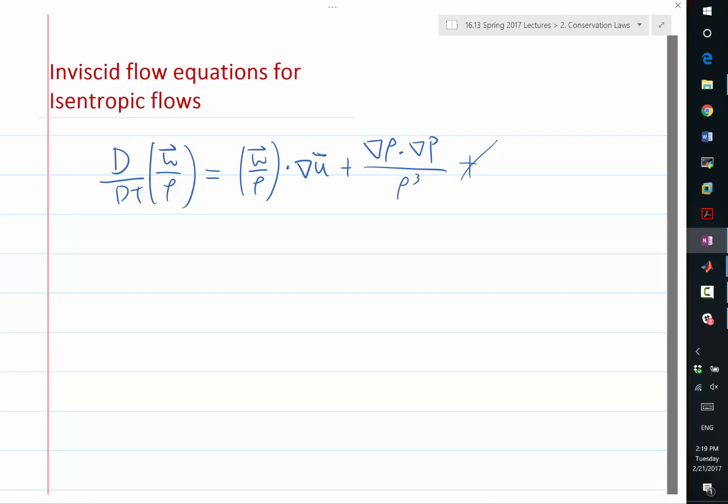Now, another assumption is that in the far field, in the free stream, there is no vorticity. So omega started with zero, and omega divided by rho started with zero. A further assumption is that the flow is isotropic. What does isotropic imply for the baroclinic torque? Zero.